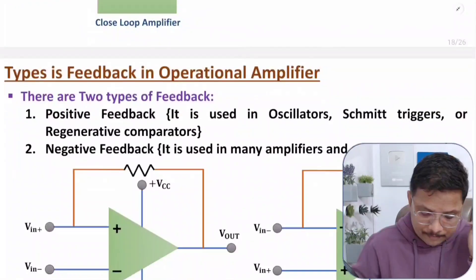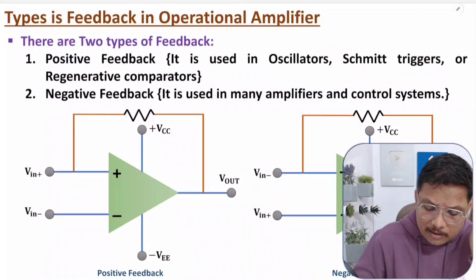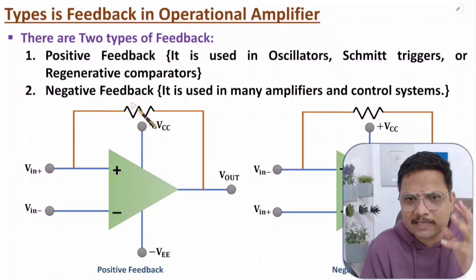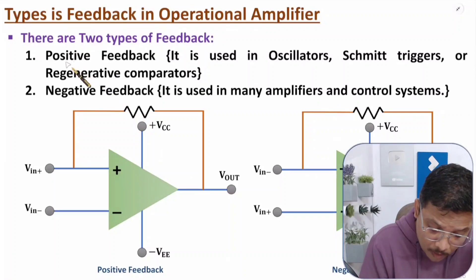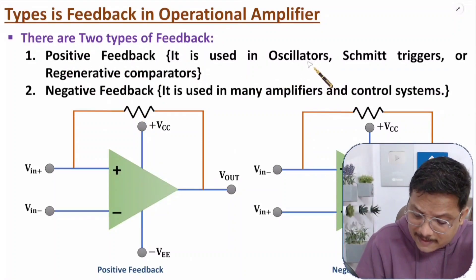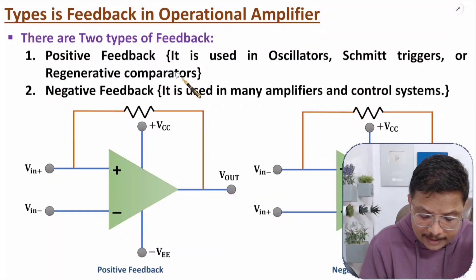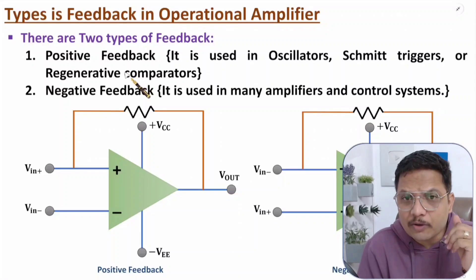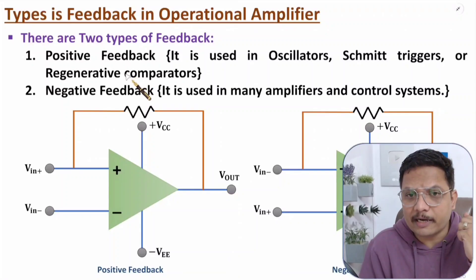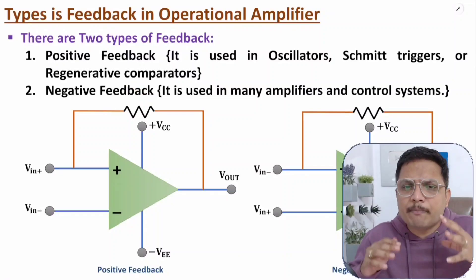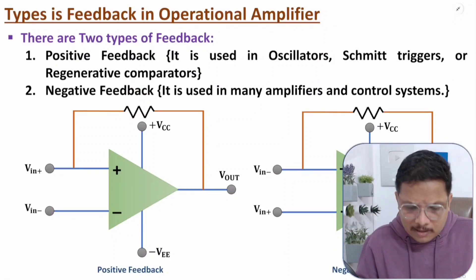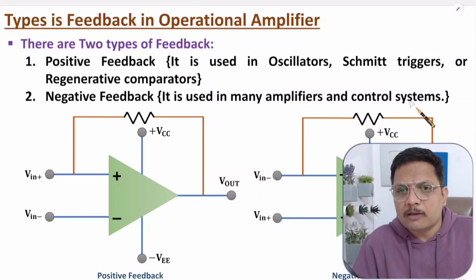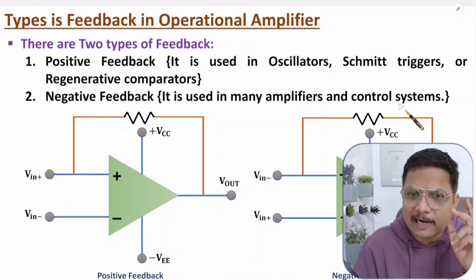There are two types of feedback, and in operational amplifiers we use both. Positive feedback and negative feedback. Positive feedback is used with oscillators, Schmitt triggers, and regenerative comparators. Negative feedback is broadly used with many systems — we can use it with many amplifiers as well as in many control systems. The majority of applications use negative feedback.